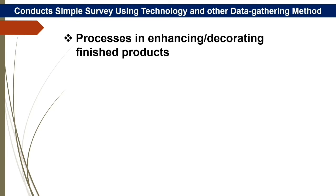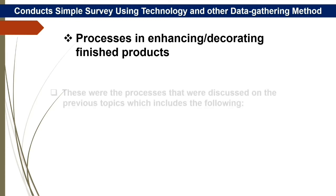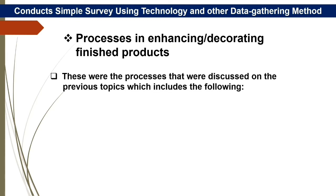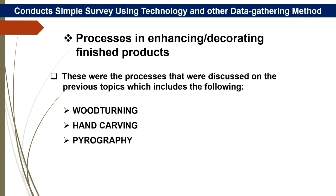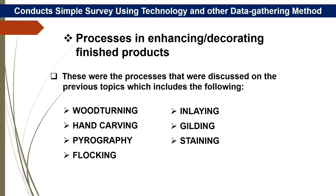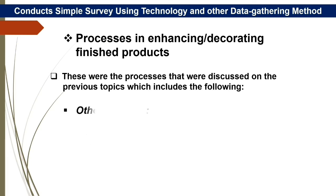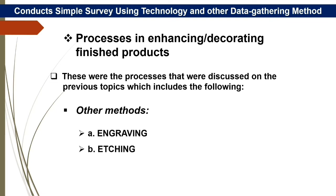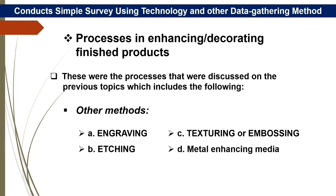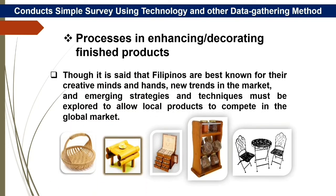Processes in enhancing/decorating finished products. These were the processes discussed on the previous topics, which include the following: drying, wood turning, hand carving, pyrography, flocking, inlining, gilding, staining, and painting.